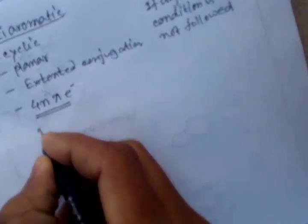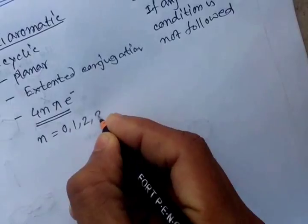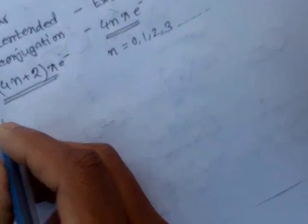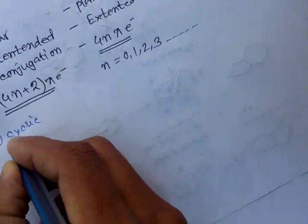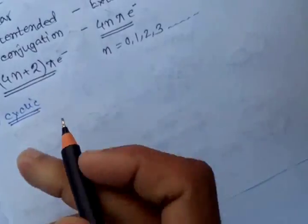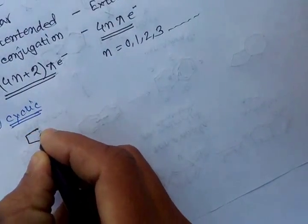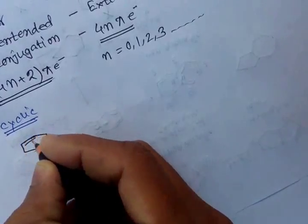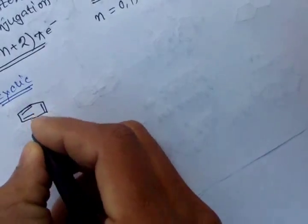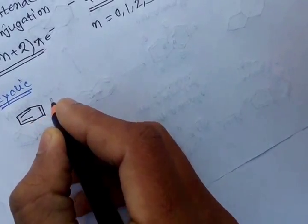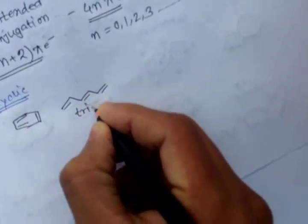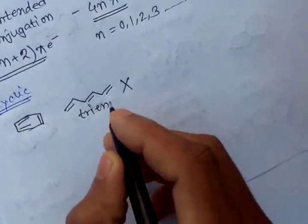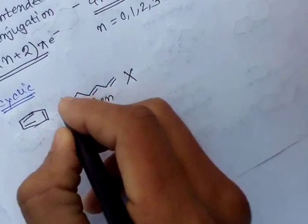Here n equals 0, 1, 2, 3, and so on. The first criterion of aromaticity is being cyclic. The well-known system benzene has three double bonds. Another compound also has three double bonds but is not aromatic because it is not cyclic.